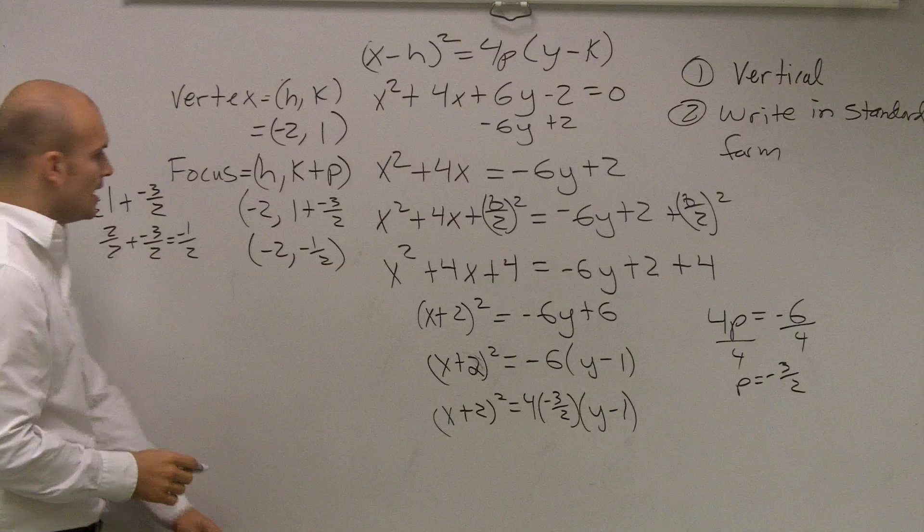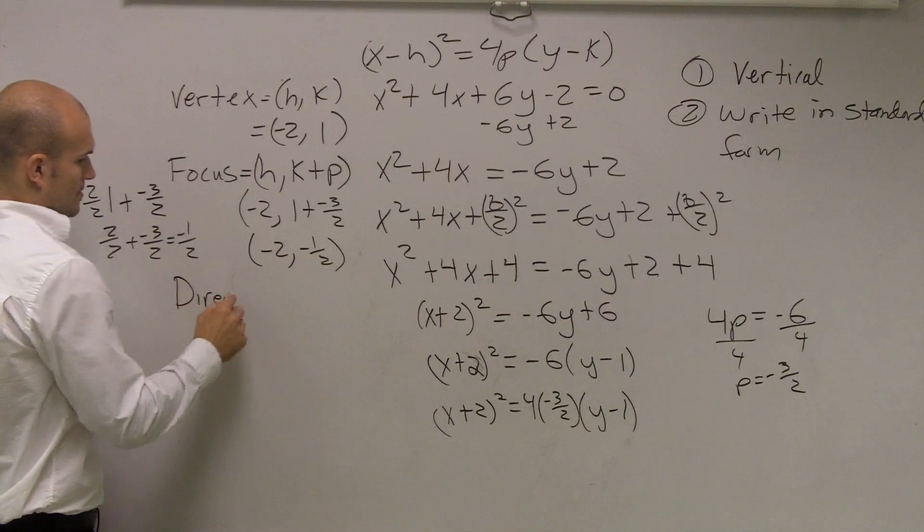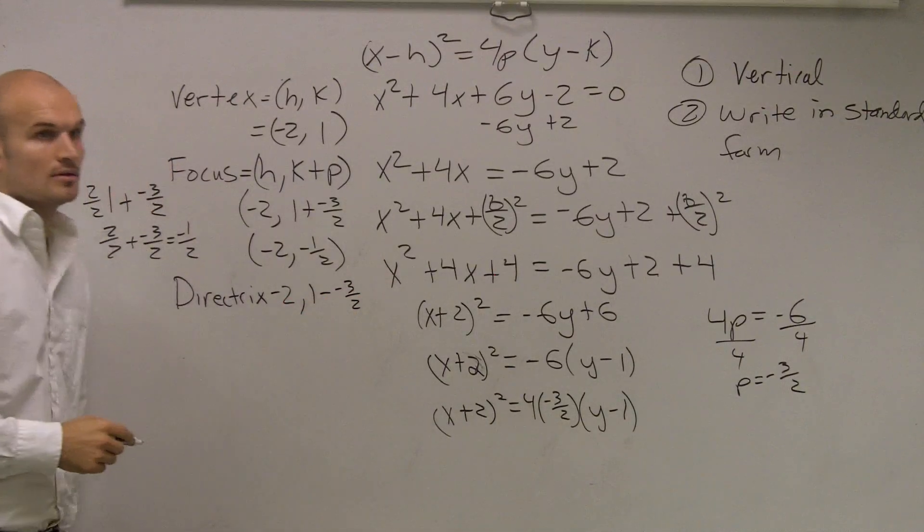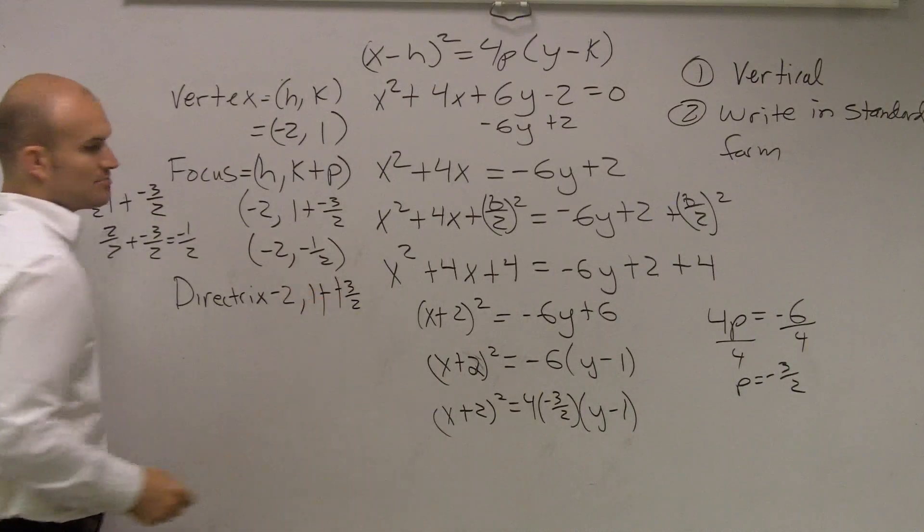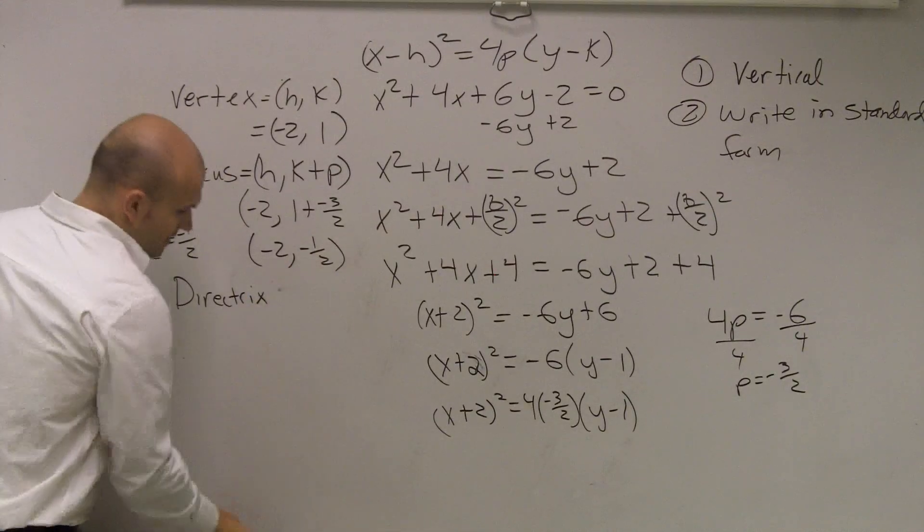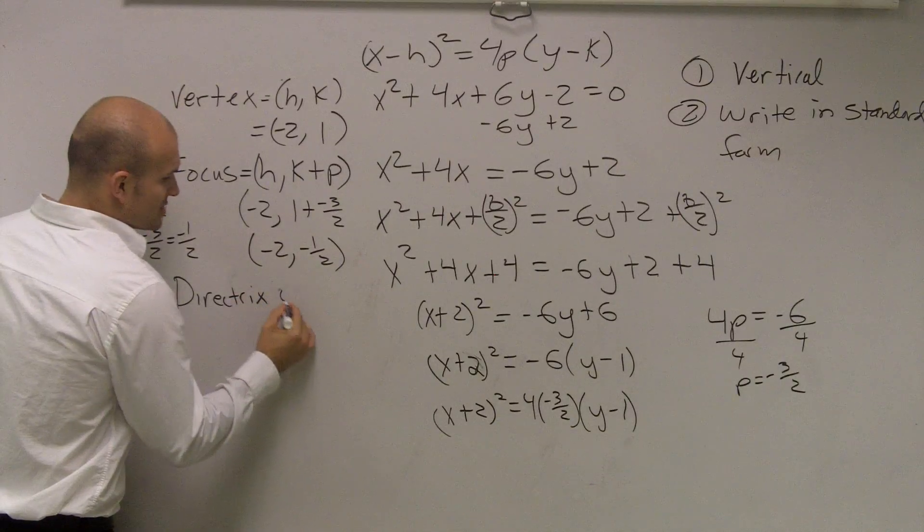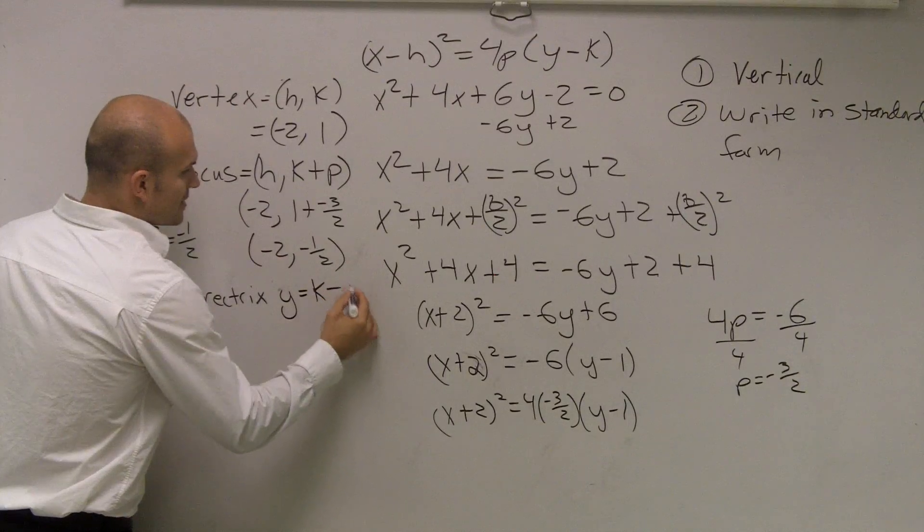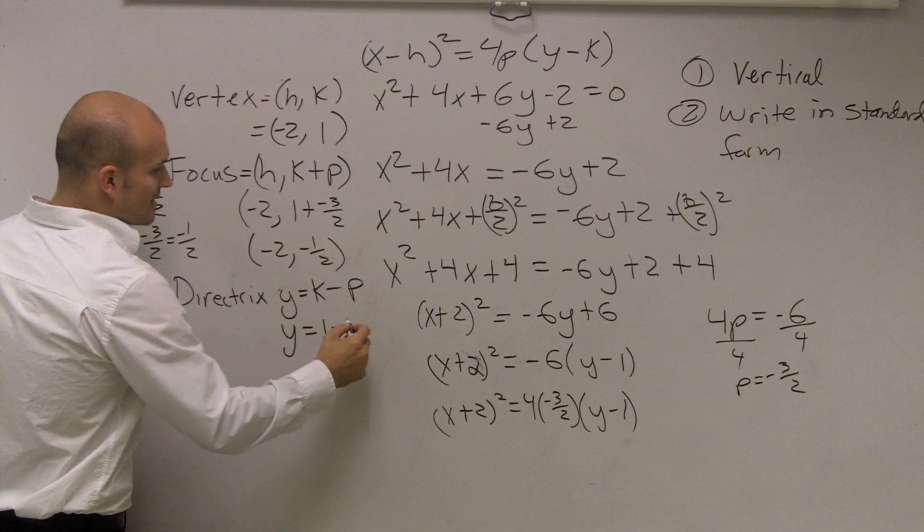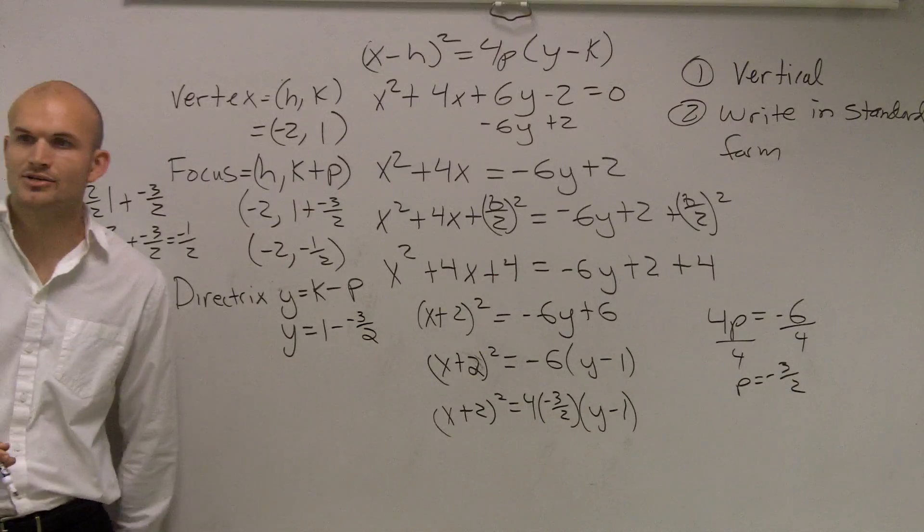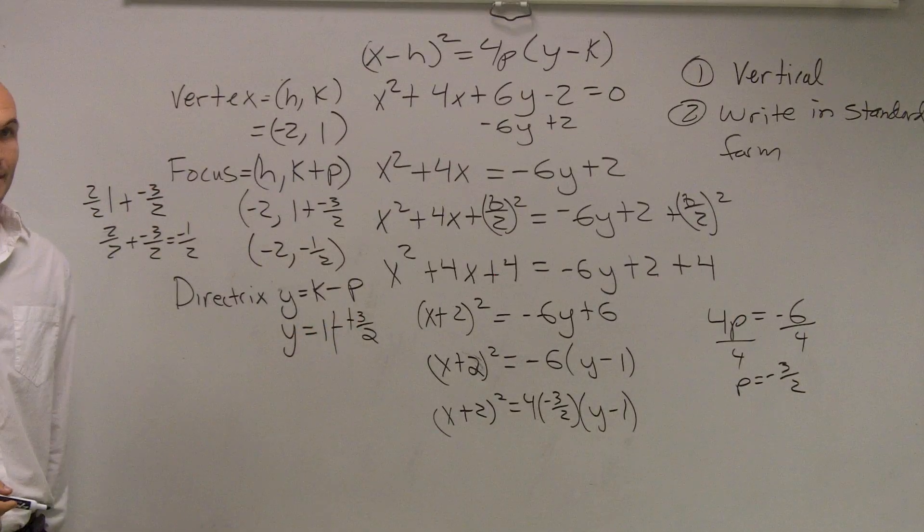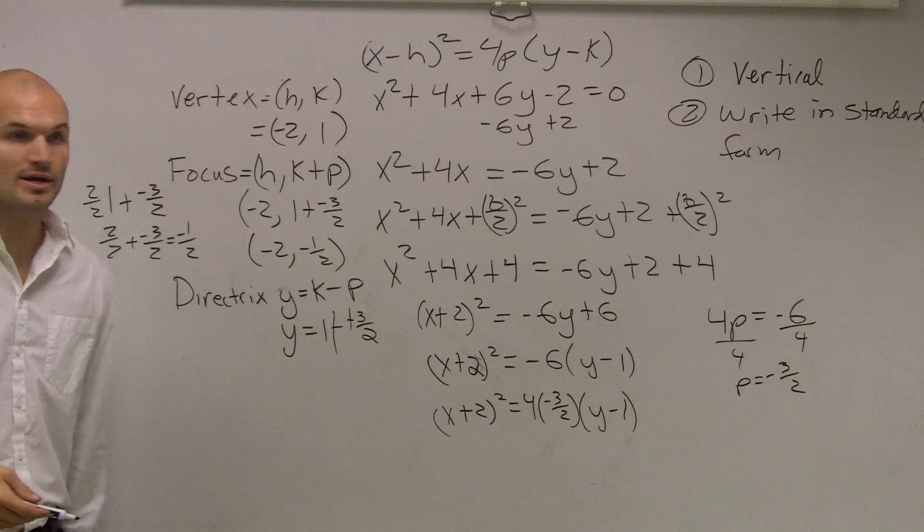So when I'm looking at my directrix, let's figure out the directrix. If you don't write out the formula, you're bound to make mistakes. Your directrix is going to be y equals k minus your p. So therefore, y equals your k, which is 1, minus a negative 3 halves. Please write the formulas out like I tried to do. So now, double negative is going to be add, right? So that's going to give me 5 halves.